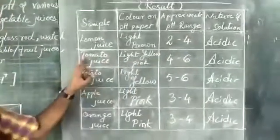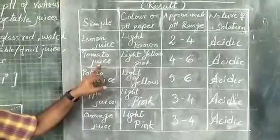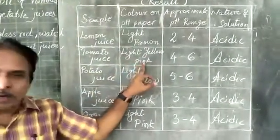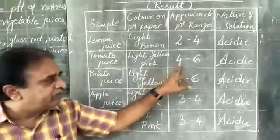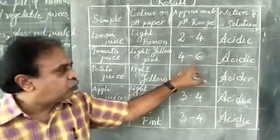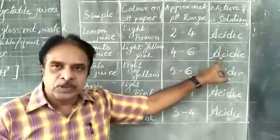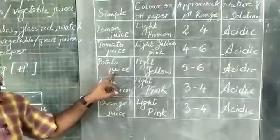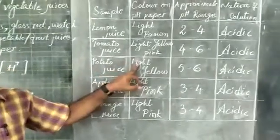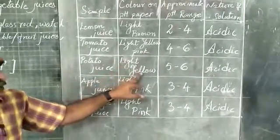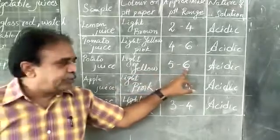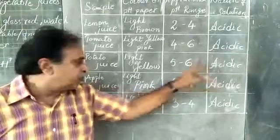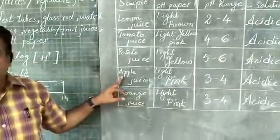For tomato juice, the color obtained on the pH paper is a lightish yellow-pink, so the pH will be roughly between 4 to 6 — it is also acidic in nature. The third sample, potato juice, shows a lightish yellow color on the pH paper, with an approximate pH of 5 to 6 — also acidic in nature.